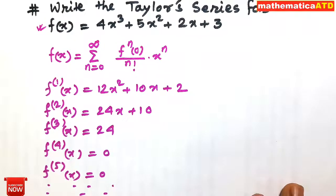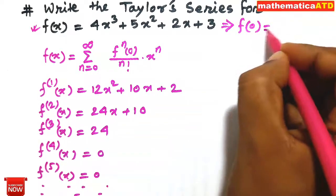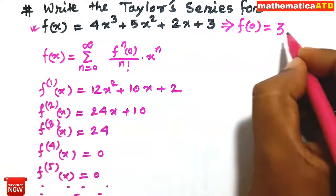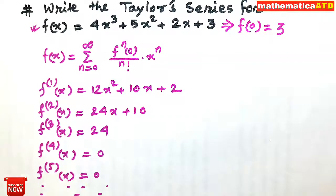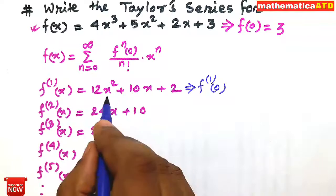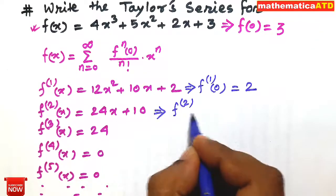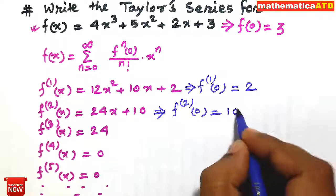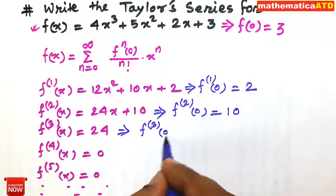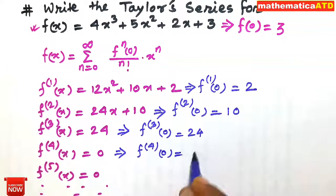Now, from the given function f(x), we find that f(0) = 4(0)³ + 5(0)² + 2(0) + 3, so f(0) = 3. From the first derivative, f'(0) = 0 + 0 + 2, which equals 2. From the second derivative, f''(0) = 0 + 10, which equals 10. Since the third derivative gives us a constant, f'''(0) = 24.